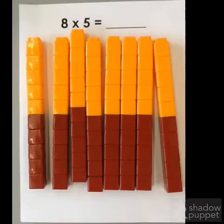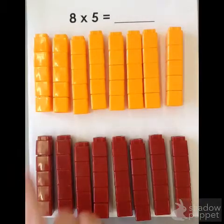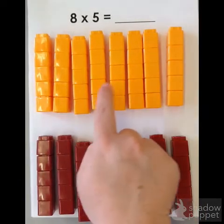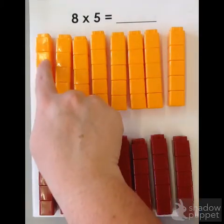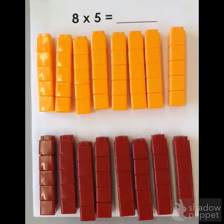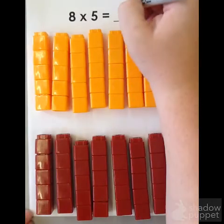So right here, I have 8 groups of 10. But I want to know what 8 groups of 5 equals. So, I can divide 80 in half to find what 8 groups of 5 equals. Half of 80 is 40. So 8 times 5 equals 40.